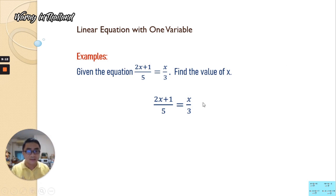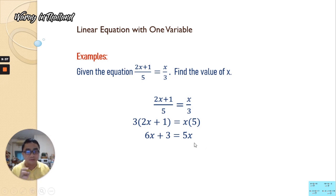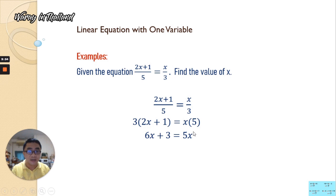Multiplying: 5 times x gives 5x, and 3 times (2x plus 1) gives 3 times 2x plus 3 times 1. Distributing: we get 6x plus 3 equals 5x. Now we combine like terms — since 6x is greater than 5x, we transpose 5x to the left side; it becomes negative 5x. And positive 3 is transposed to the right side, becoming negative 3. Combining: 6x minus 5x is x. Therefore, the variable x is equal to negative 3.